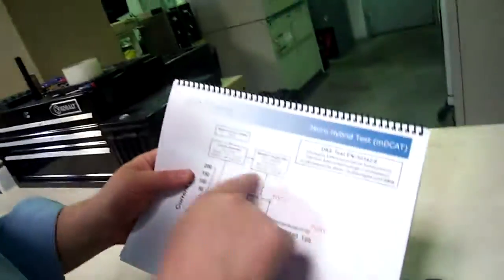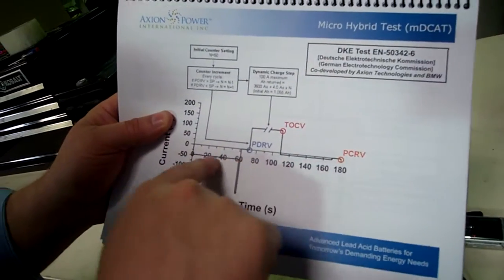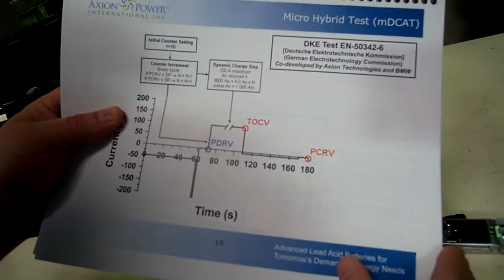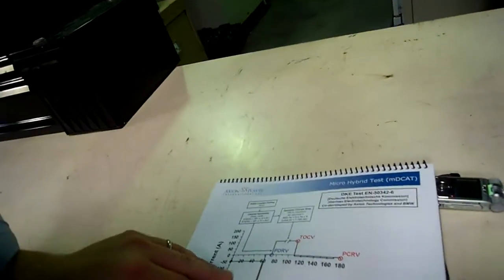One of the important aspects we want to describe about the battery is how it performs under a micro-hybrid type of environment. We'll perform a test where we put a hotel load on the battery and then recharge it dynamically, so we see how long a charge step will take as you progress in cycling the battery.